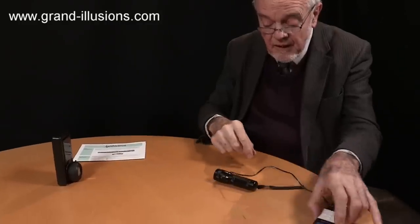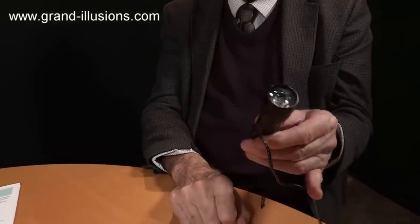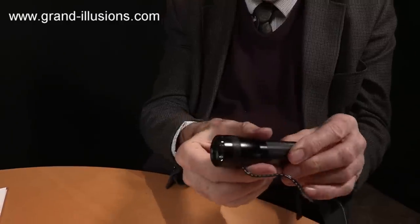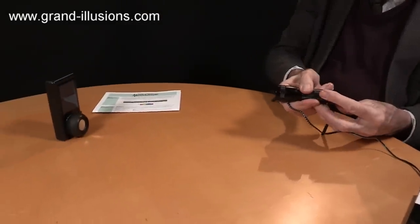The other bit of equipment you must have is this extraordinary simple torch, but it's got a lead coming from it, something very special. If I turn it on and shine it towards the little solar cell, what happens?